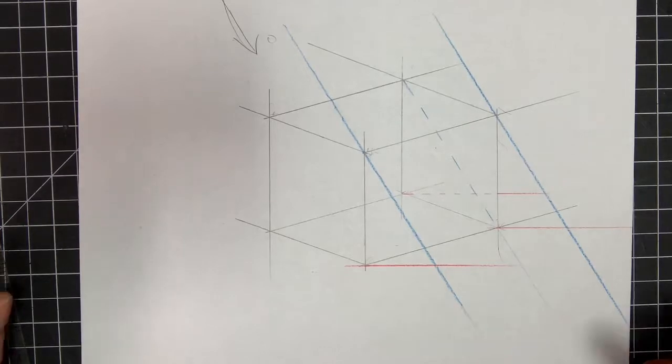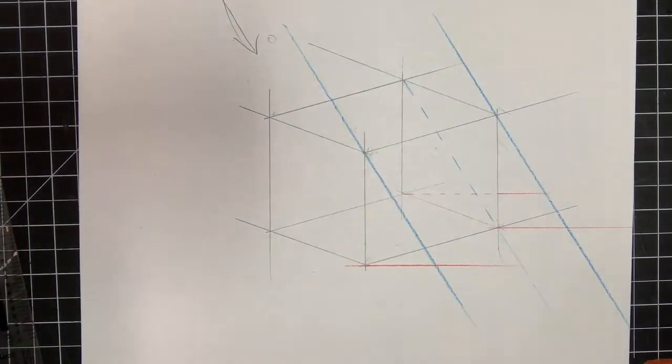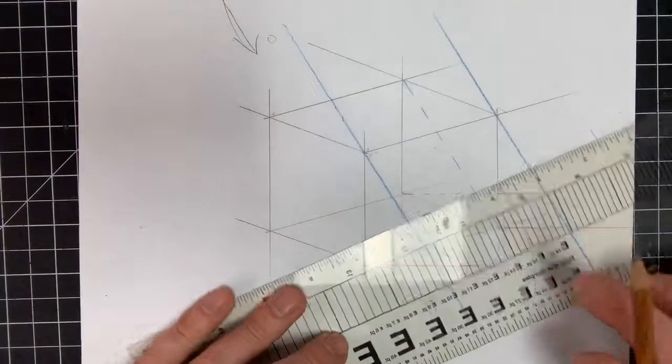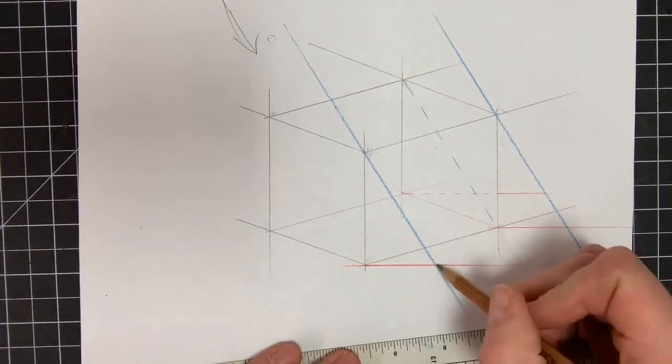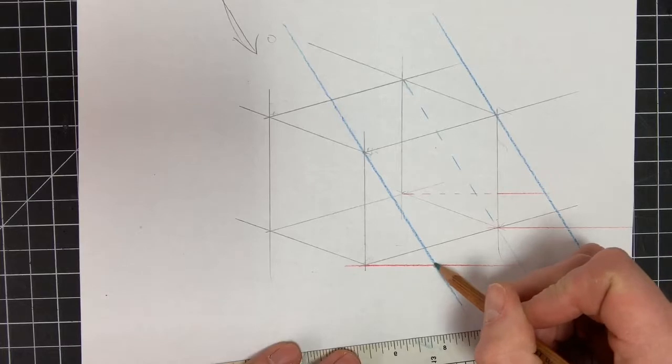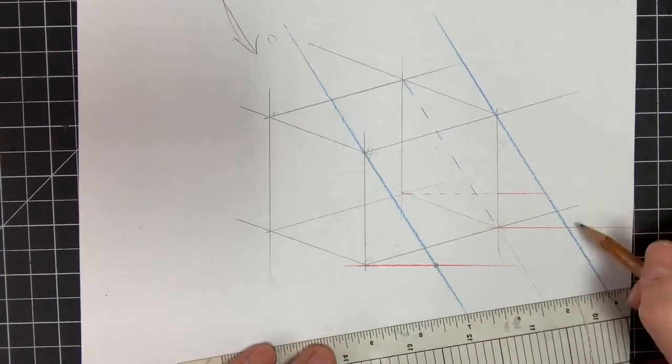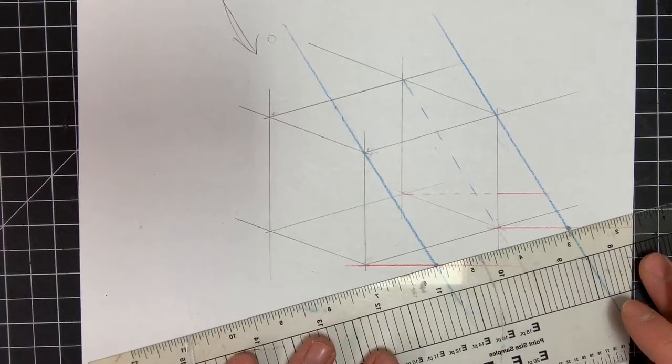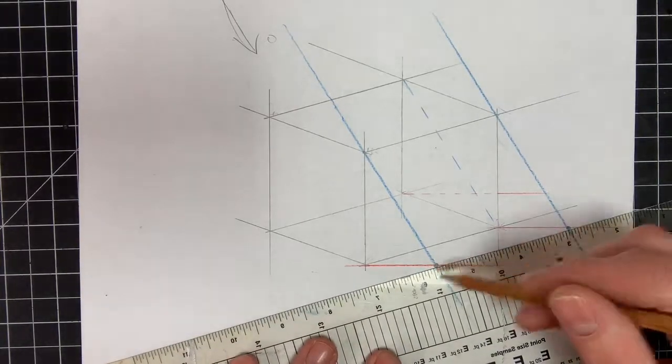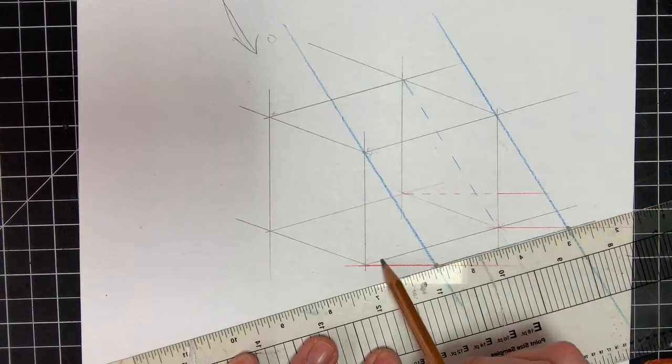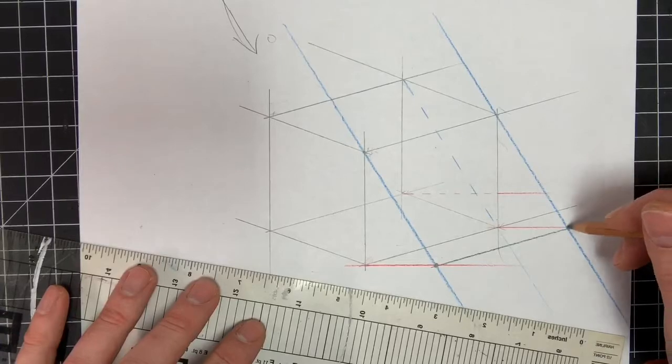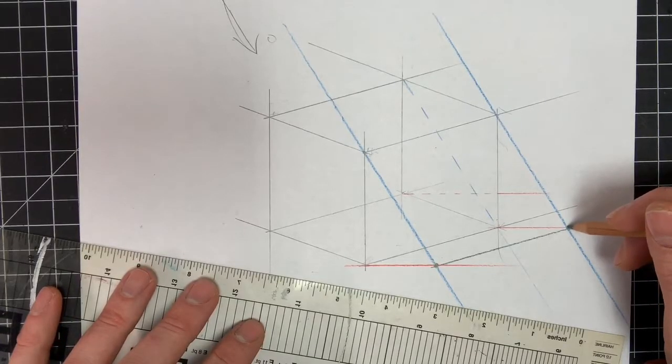So the next thing I'm going to do is I'll get a different colored pencil and see where this blue line intersects this red line. I'm going to put a little green dot there and see where this blue line intersects this red line here. I'm going to put a perfect parallel line to this line here. Same thing right here.